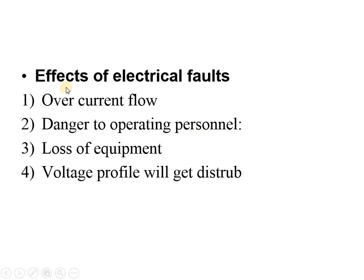Now for the effects of fault in the power system: after a fault, overcurrent will flow and this overcurrent will damage electrical equipment — specifically the windings — and the equipment may even catch fire. The second effect is danger to operating personnel. The person operating on the switchyard may get injured due to an electrical fault.